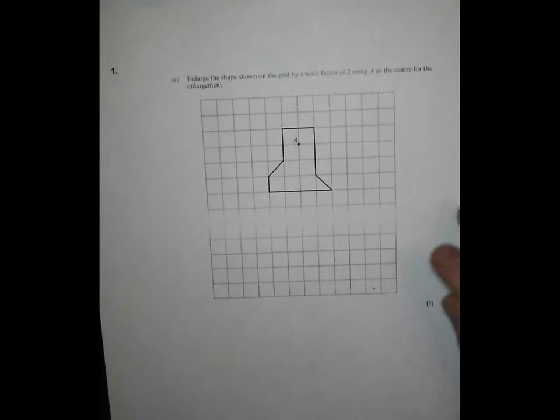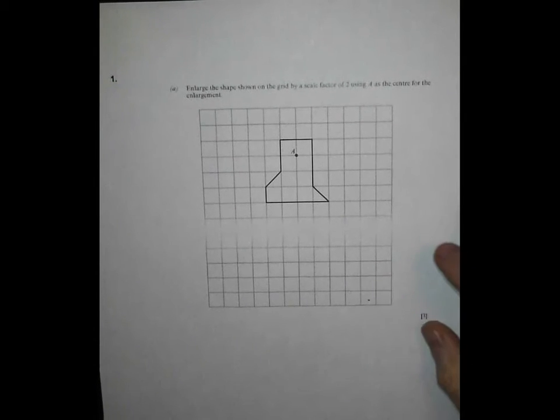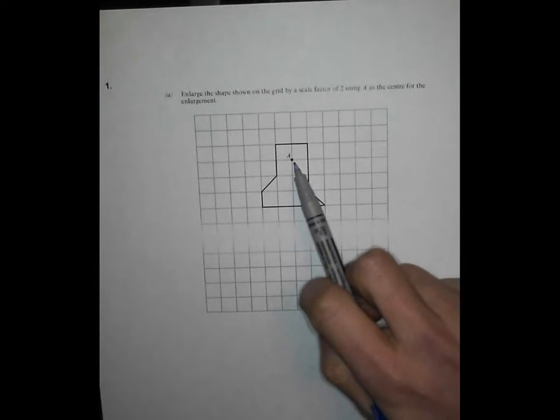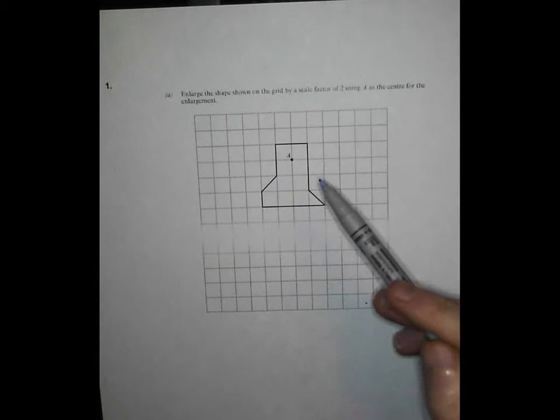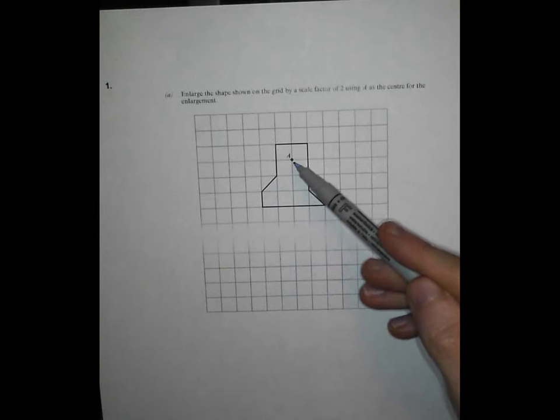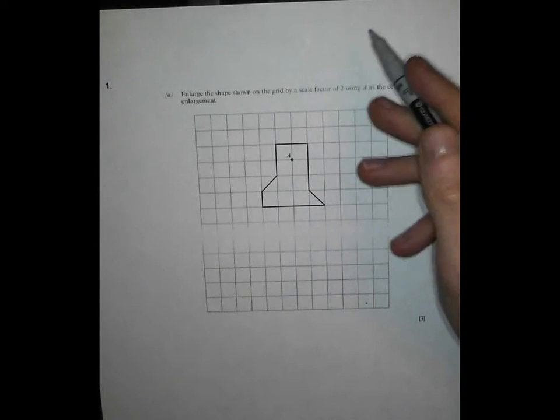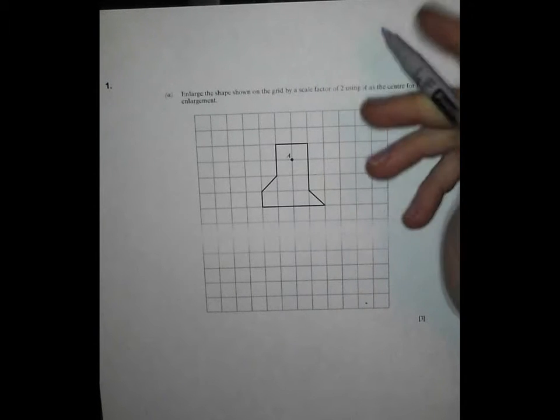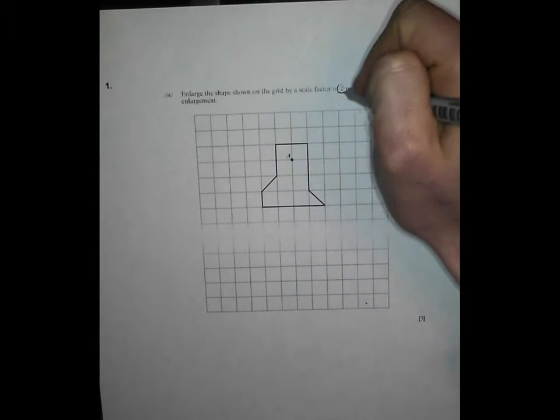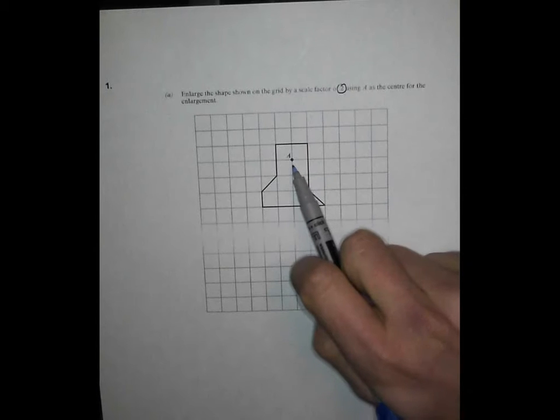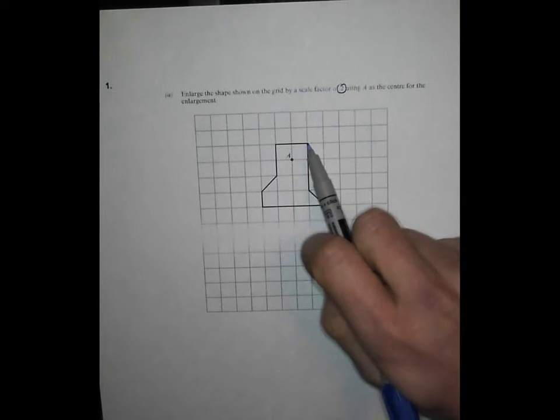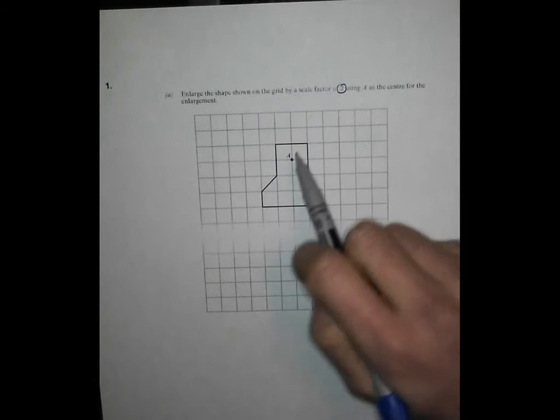Enlarge the shape shown on the grid by a scale factor of 2 using A as the centre of enlargement. Now often on enlargement questions you get a coordinate that you need to find first, but this one's been nice, it's told us where A is. But it's also been a little nasty because not often is the centre of enlargement actually inside the shape. But our rules still apply. The way I do these is I say alright, scale factor 2. So I'll work out how far I need to go from the centre of enlargement to each of my points and then I come back to the centre and just go twice as far.